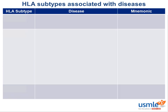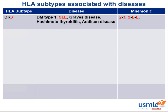HLA-DR3 is associated with diabetes mellitus type 1, SLE, Graves' disease, Hashimoto thyroiditis, and Addison disease. Since both HLA-DR2 and HLA-DR3 are associated with SLE, the mnemonic is '2-3-SLE,' which has a nice rhyme and rhythm to it.